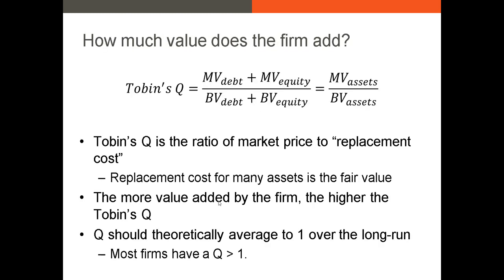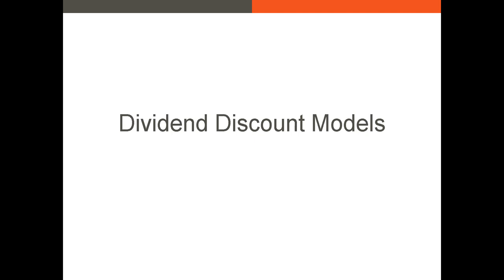Going along with replacement cost is Tobin's Q. Tobin's Q is a ratio where we calculate the market value of both debt and equity and divide that by the book value of debt and equity. This is very similar to our market-to-book ratio, but includes all assets of the firm. It tells us how valuable the firm's assets are relative to their historical or replacement cost. Theoretically, over the lifetime of the firm, Tobin's Q should average to one, although in the real world most firms will have a Tobin's Q greater than one.